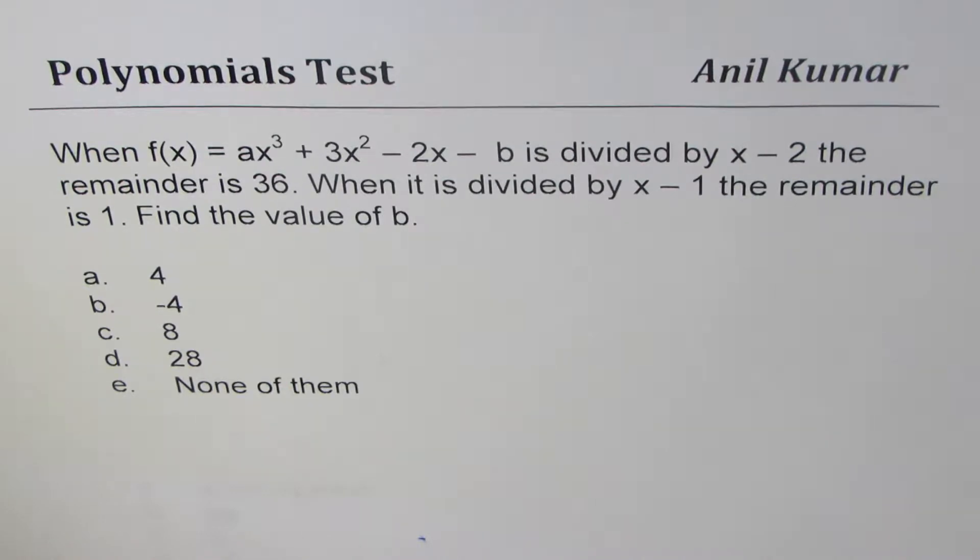The question is: when f(x) = ax³ + 3x² - 2x - b is divided by x - 2, the remainder is 36. When it is divided by x - 1, the remainder is 1. Find the value of b.